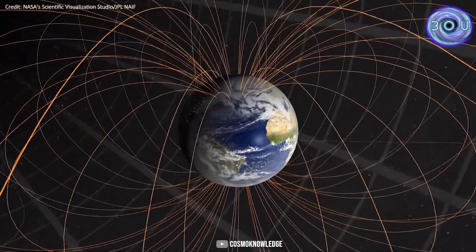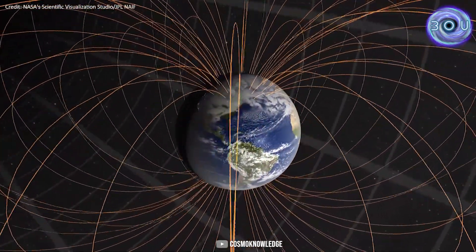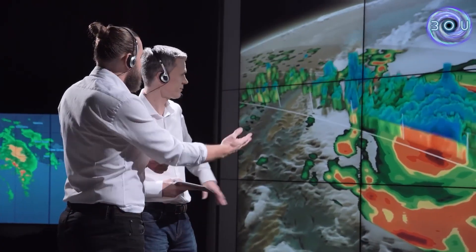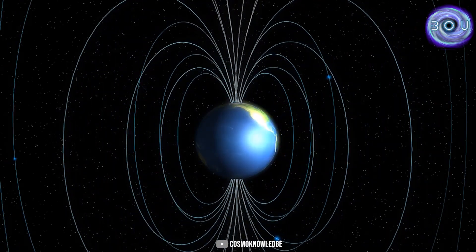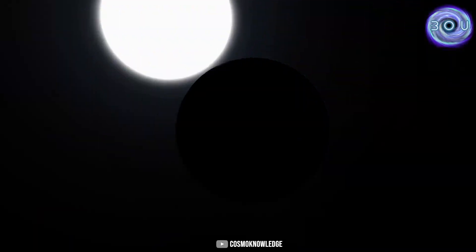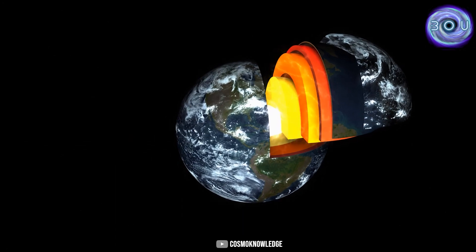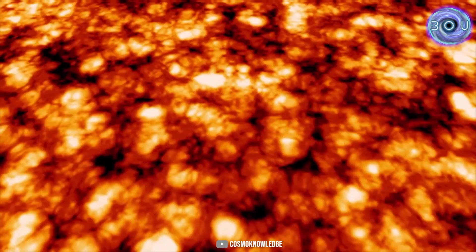Now that we understand how the Earth's magnetic field protects life, let's move on to the main question. How was the Earth's magnetic field formed? To answer this question, let's embark on a journey into the depths of the Earth's core together.